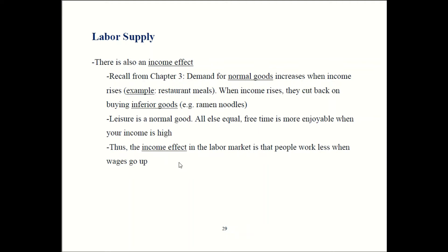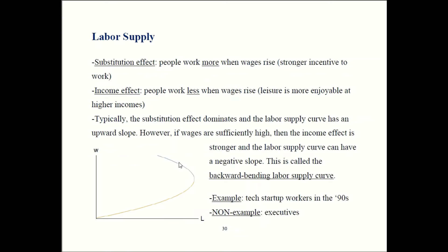However, there are some exceptional cases where the income effect can dominate instead, and that can generate what's called a backward-bending labor supply curve. With wage on the y-axis and number of workers (L) on the x-axis, most of the time when wages go up, you'll see more labor rather than less. However, past a certain point, the income effect starts weighing out, and the premium you start putting on your free time ends up being more important than the stronger incentive from higher wages.